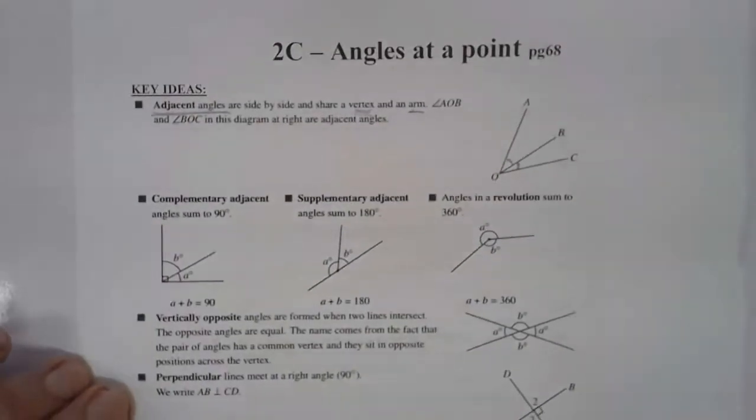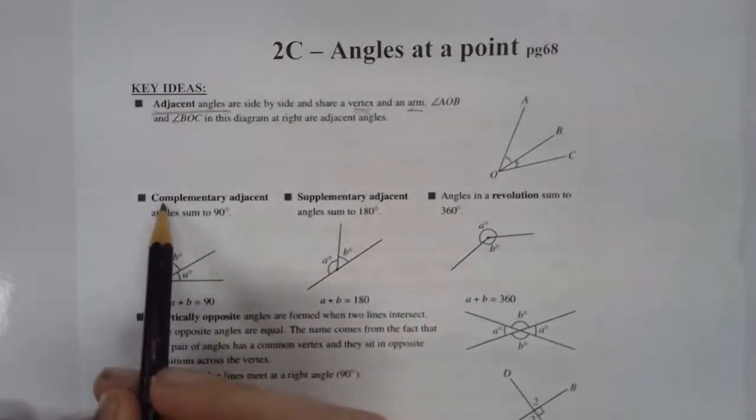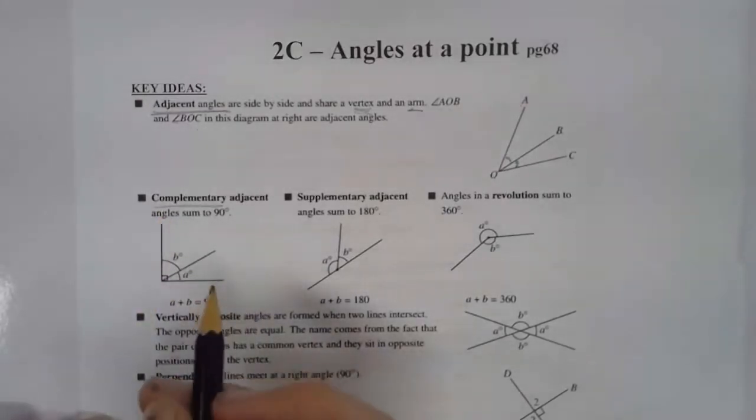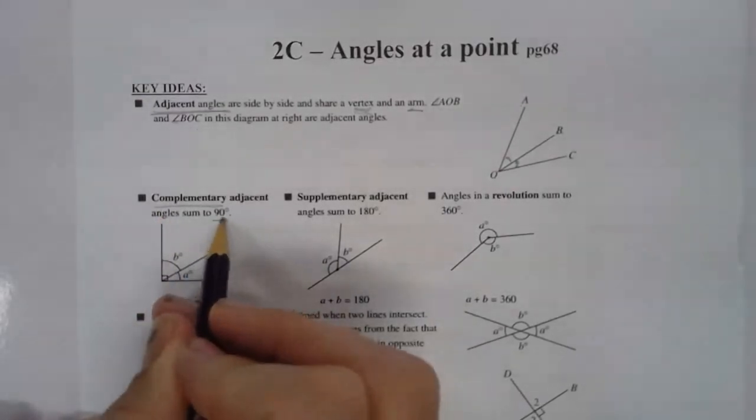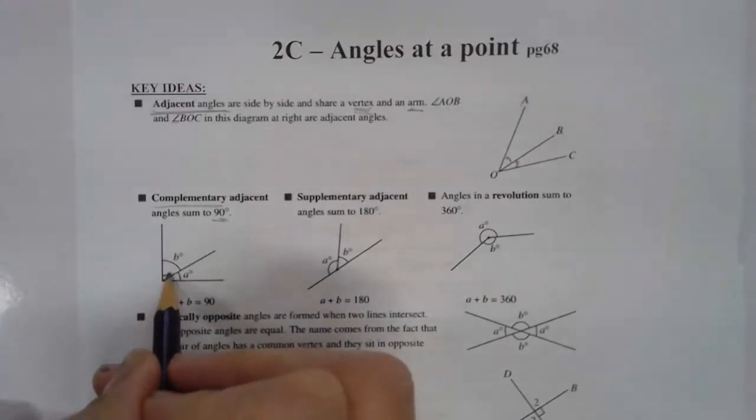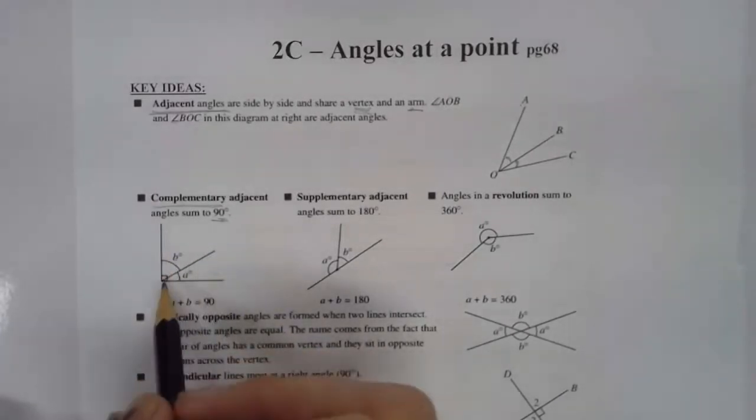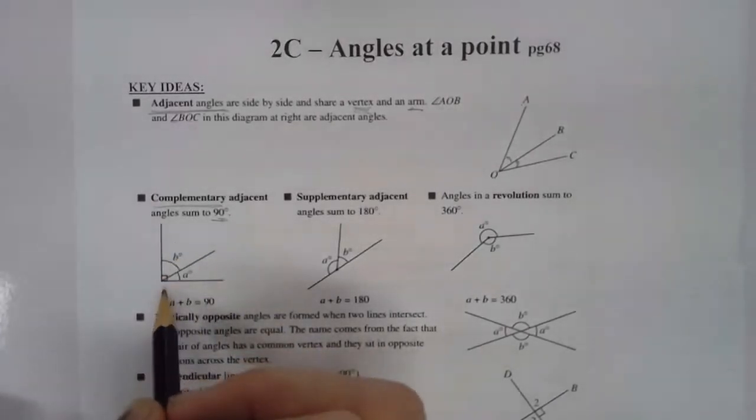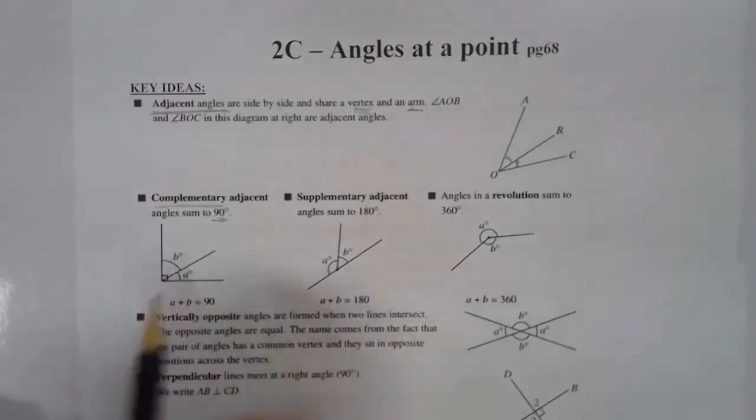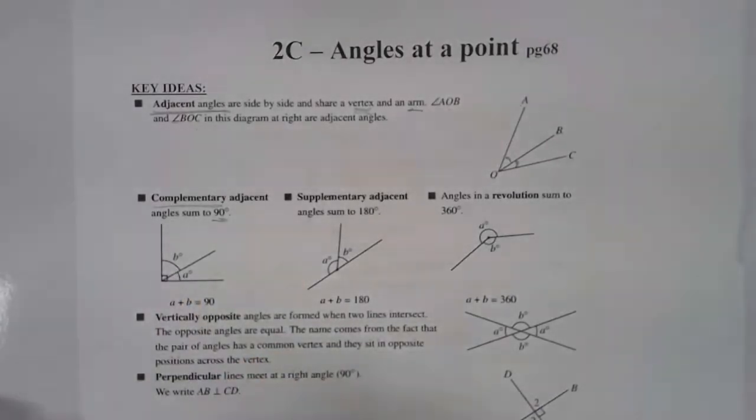Now how do we find that useful? A complementary adjacent angle will add up to 90 degrees. You see here the symbol for a right angle, that tells us we've got 90 degrees. So if we add up however many degrees B is and subtract that from 90, we will get the answer for A. They add up to 90.